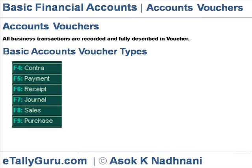Cash vouchers involve movement and transactions of cash, like Contra, Payment, and Receipt vouchers. Non-cash transactions are recorded through journal vouchers. Journal vouchers of non-cash transactions may involve both trade and non-trade transactions. Trade transactions are recorded in sales and purchase vouchers. Some organizations also use debit and credit notes for goods return and other adjustments related to trade transactions. Non-trade, non-cash transactions are normally recorded in journal proper.